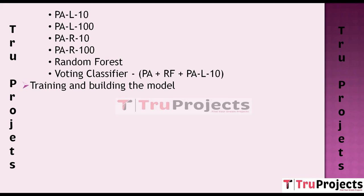This module involves training the machine learning models used for text classification. It includes feeding the prepared and preprocessed data into the selected algorithms — SVM, PA1, PAL10, PAL100, PAR10, PAR100, Random Forest, and Voting Classifier. The models learn from this data to make predictions and classify text into relevant categories. Model training is a crucial step as it determines how well the system can categorize new unseen data.